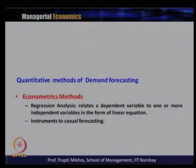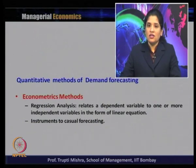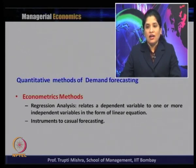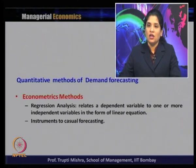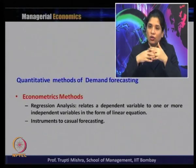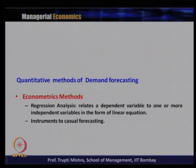The first quantitative method was trend projection, then the barometric method. The third method is the econometric method. Here we take two kinds of analysis: regression analysis and simultaneous equation methods. Regression analysis relates the dependent variable to one or more independent variables in the form of a linear equation. Correlation talks about the relationship between two variables, while regression talks about the extent and magnitude of the change in one variable when the other variable changes.